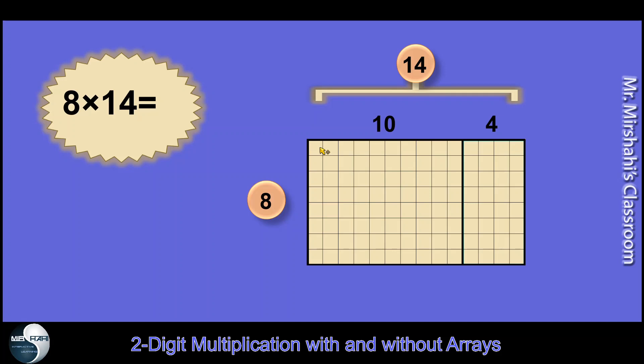Why did I do that? Because multiplying by 10 is easy. 10 is a round number. Anything times 10, you just add a zero. So 8 times 10 is the area of this section, this rectangle. And that's 80, I put it here.